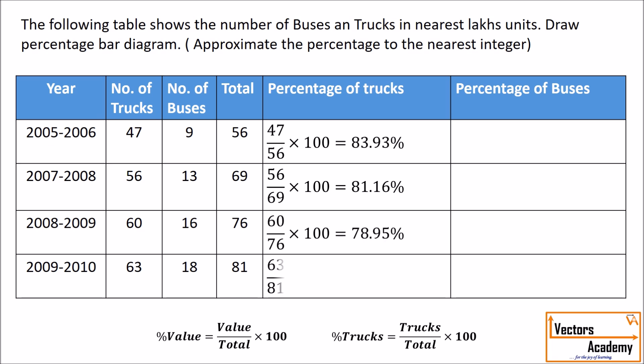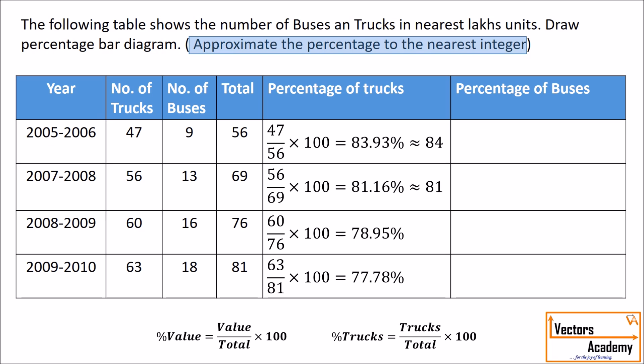Similar calculation goes on for the other two years. We need to approximate the percentage to the nearest integer. So 83.93 gets converted to 84, 81.16 gets converted to 81, 78.95 will be approximately equal to 79, and 77.78 will be approximately equal to 78.